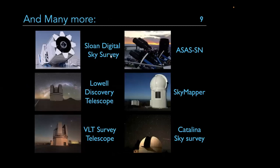SDSS, set up around 2000 and run in different phases, has created the most detailed 3D map of our galaxy and the nearby universe. ASAS-SN is one of the most prolific supernova hunters. Each survey has different goals and different limitations — some in the northern hemisphere can't see the south, some have depth limitations, and some have different science drivers — which is why you need multiple surveys.